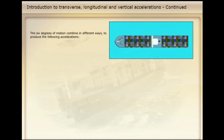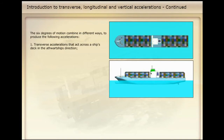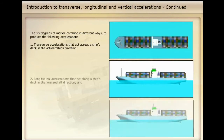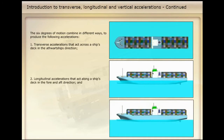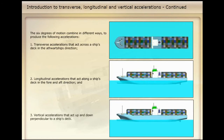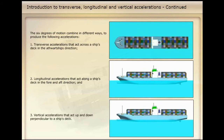The six degrees of motion combine in different ways to produce the following accelerations: (1) transverse accelerations that act across a ship's deck in the athwartships direction; (2) longitudinal accelerations that act along a ship's deck in the fore and aft direction; and (3) vertical accelerations that act up and down perpendicular to a ship's deck.